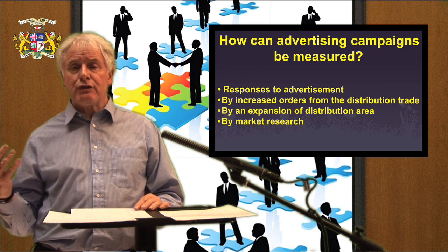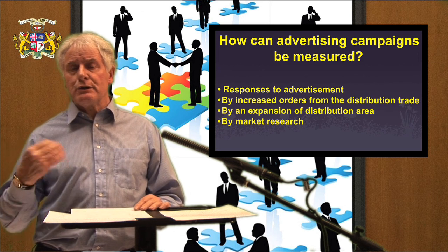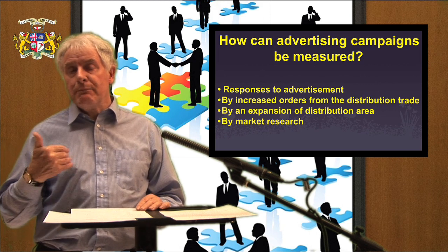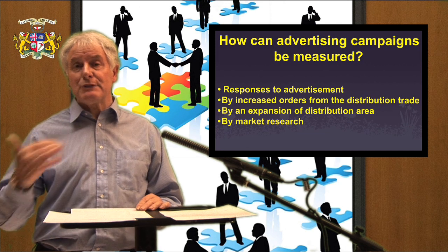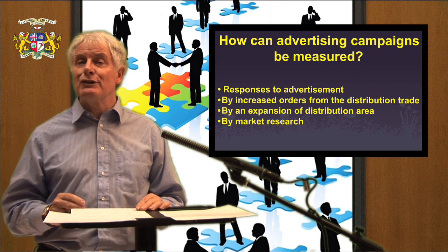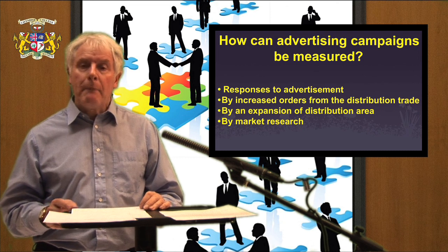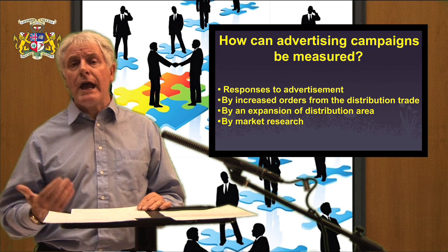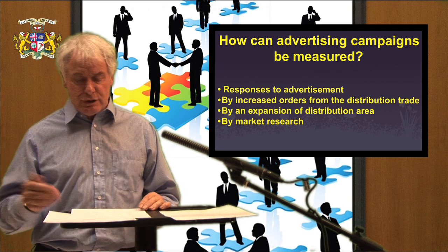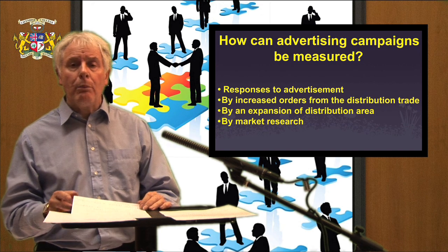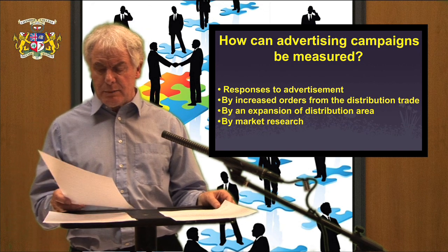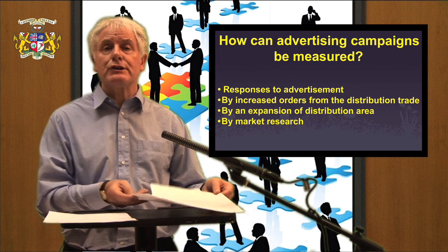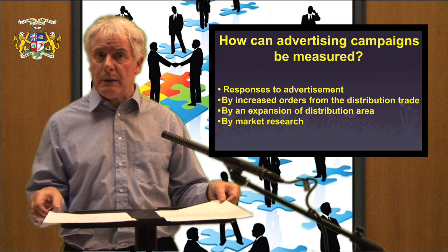By the increase in orders from the distributive trades — if we produce a product and sell it through the distributive trade, and they are reordering at a faster rate, it means they're selling out to the consumer at a faster rate. By an expansion of distribution area, getting our product sold over a wider area within a country, a region, or such as Europe. Or by market research activity to establish recall of our campaign and awareness of the brand name of our product being advertised.